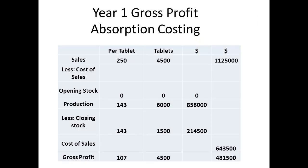Our total sales for absorption costing in year 1 come to $1,125,000 — we multiply $250 by 4,500 units. There is no opening stock. We have produced 6,000 units at a cost of $858,000 and we will have a closing stock valued at $214,500. Our total for cost of sales is then $858,000 less $214,500, which is $643,500. We subtract cost of sales from sales and get a figure for gross profit of $481,500.